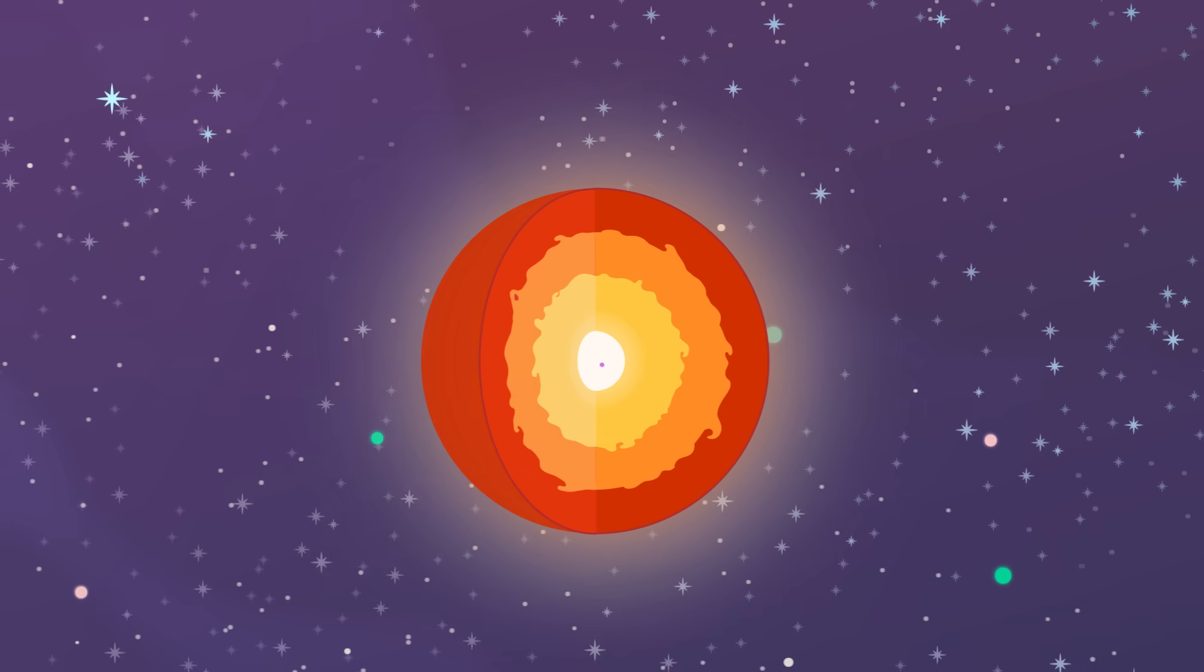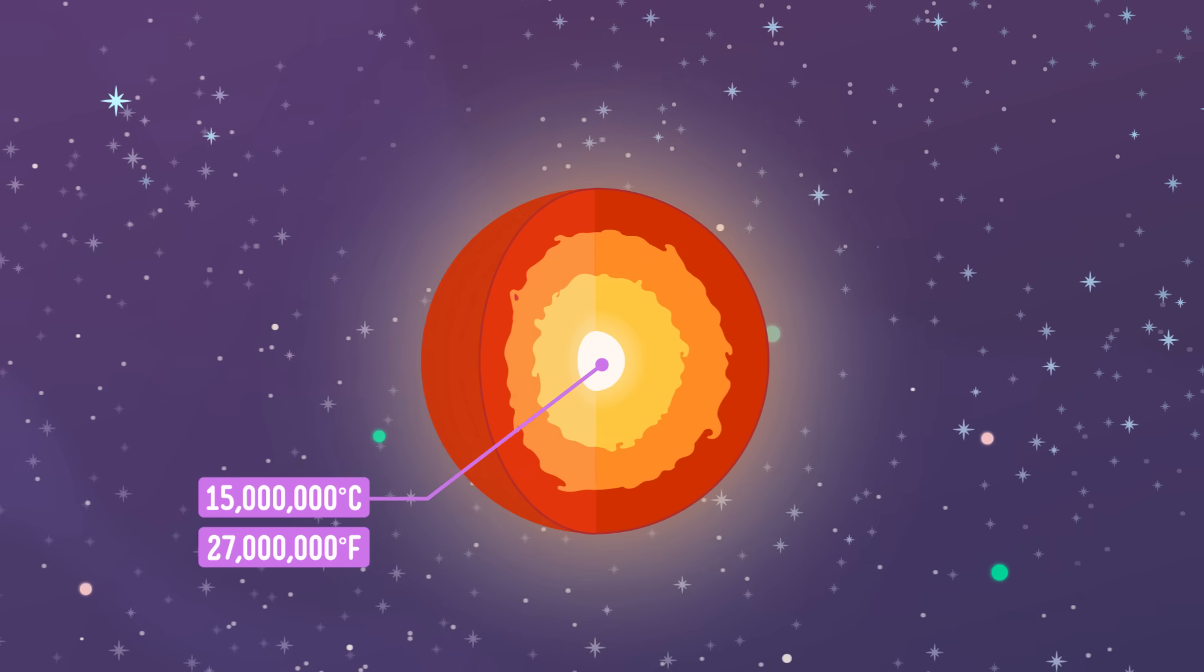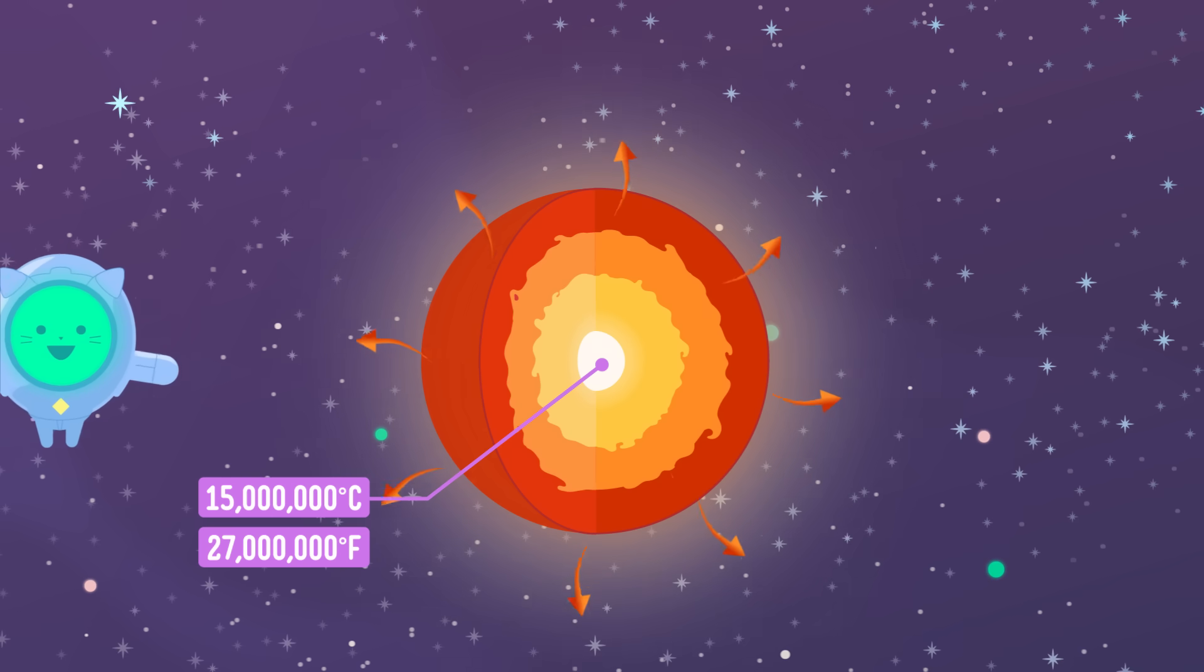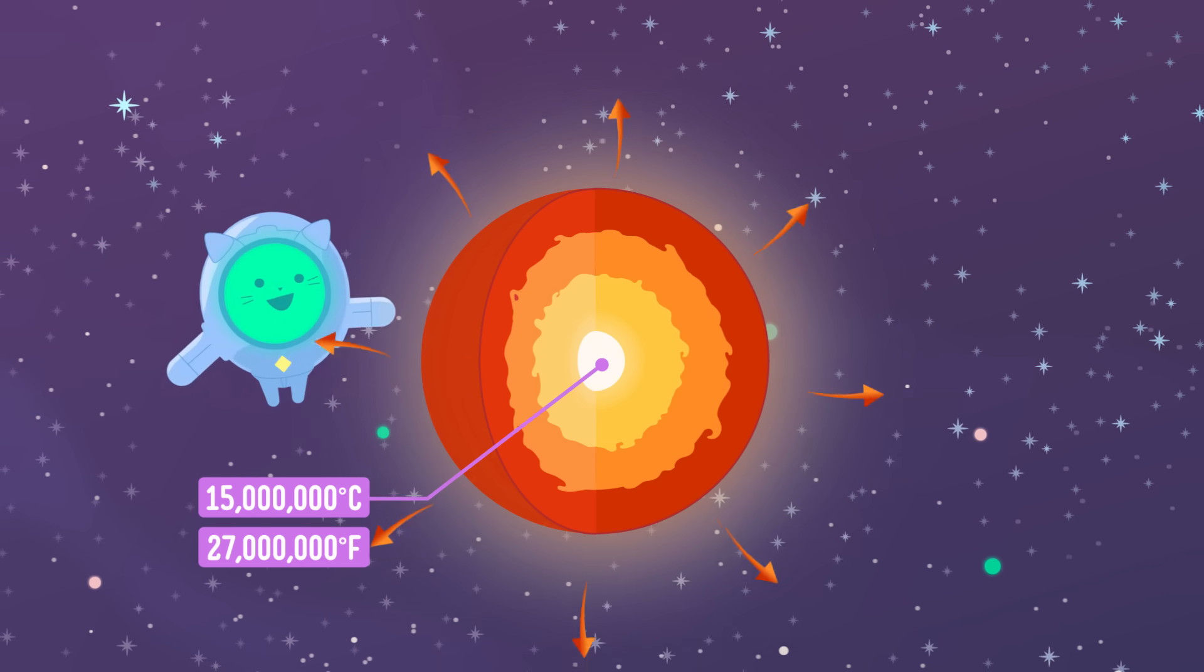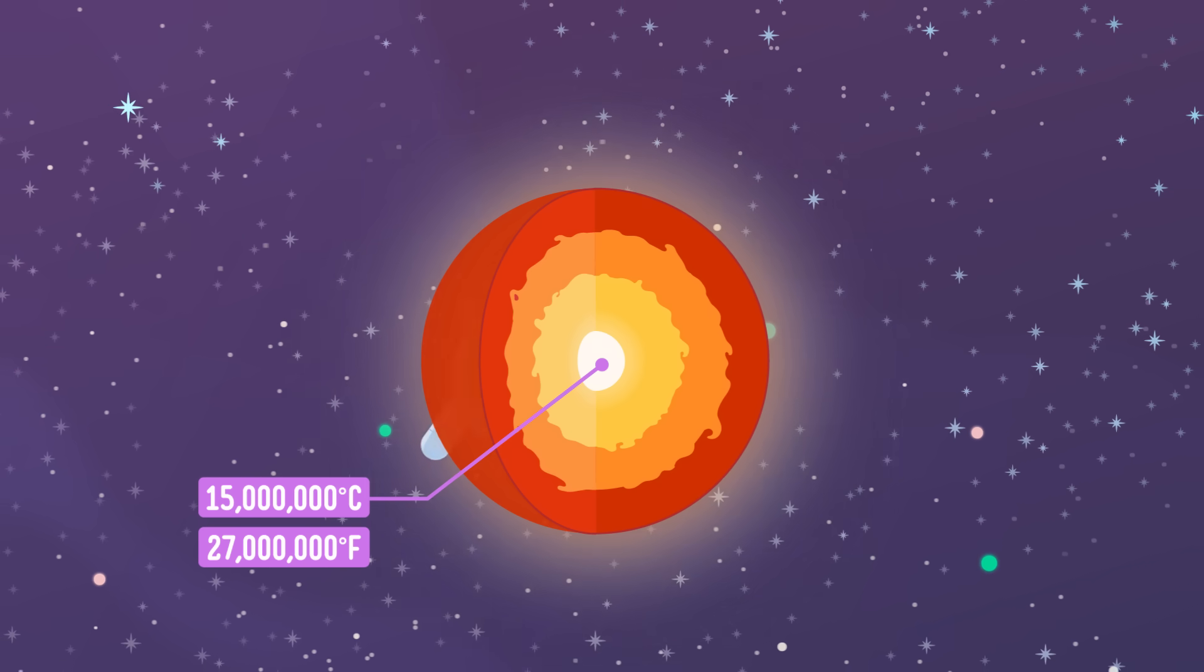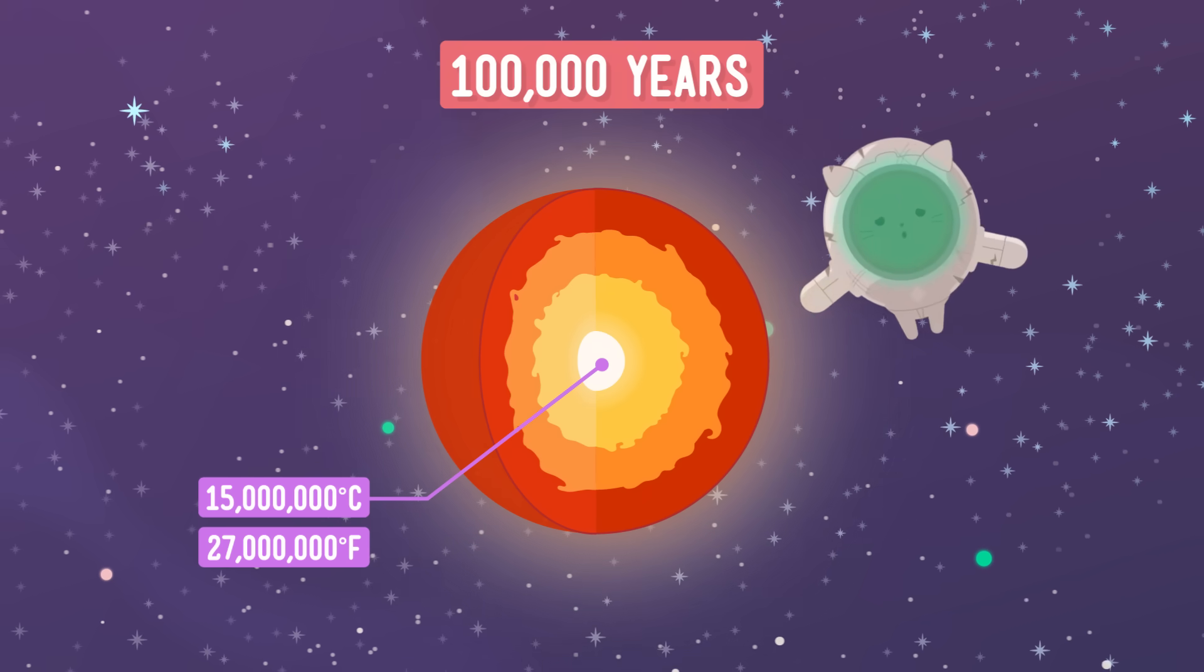Energy is created in its super hot 15 million degree core. That energy then travels outward from the core to the surface of the Sun. But this journey from the center of the Sun to its surface can take over 100,000 years to complete.